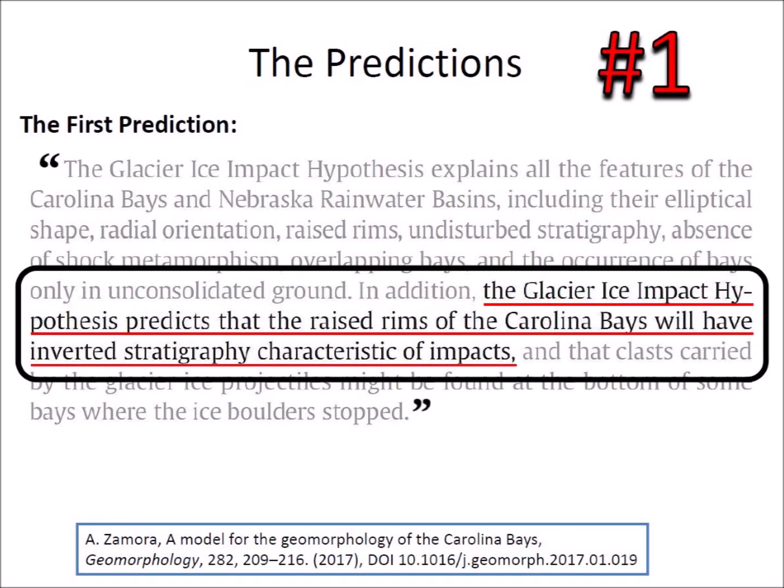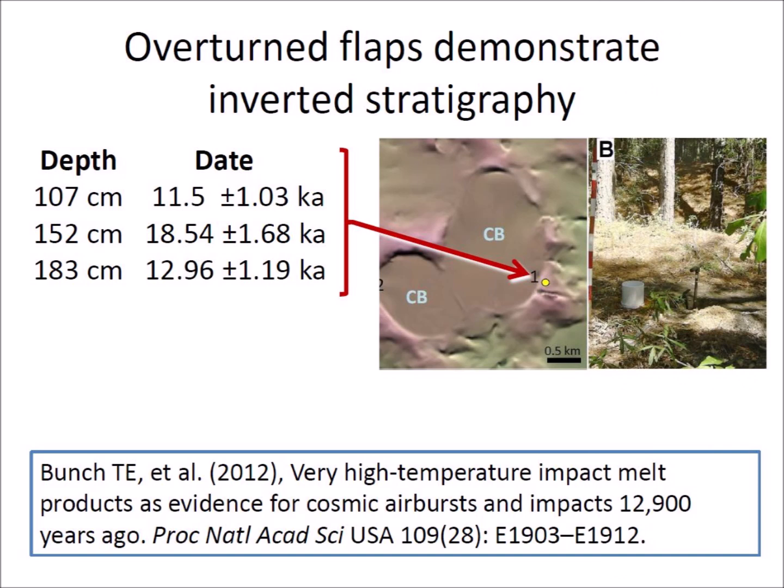When I made the prediction of inverted stratigraphy for the Carolina Bays in 2017, I was not aware of any such documented cases. One year after my publication, my neighbor Adam Glass, who was very interested in the Carolina Bays, brought to my attention a paper published five years earlier that had reported inverted stratigraphy. Ted Bunch and 17 co-authors published a paper in 2012 showing dates obtained at different depths of a test location in the rim of a Carolina Bay near Blackville, South Carolina.